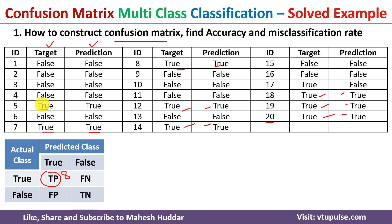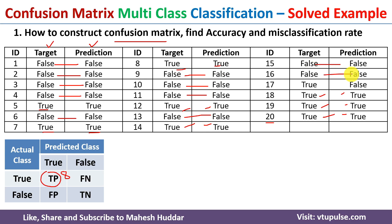Coming back to true negative — that is where the actual class is false and the predicted class is also false. Counting through the data, we find 11 such examples. So there are totally 11 true negative examples.